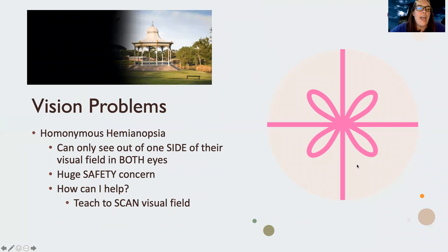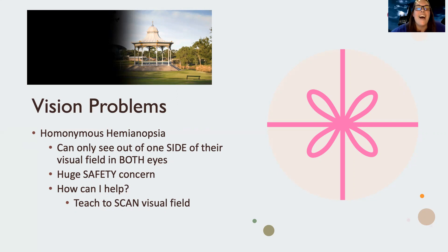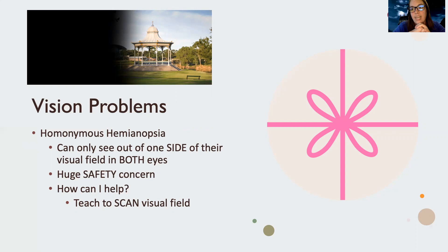There are also vision problems. I usually call this main vision problem 'HH' because it's very hard to pronounce. I'll say it once: homonymous hemianopsia — HH is what I'm going to call it from here. Effectively, this is a vision issue where they can only see out of one side of both of their eyes. So each eyeball is only seeing half of the visual field. As shown in the picture, literally half of each eyeball is not seeing what it's supposed to see. This is a vision problem directly related to the stroke.